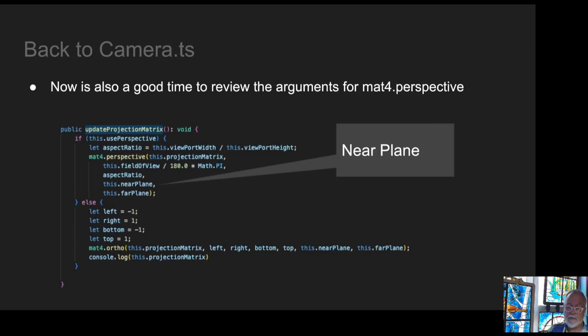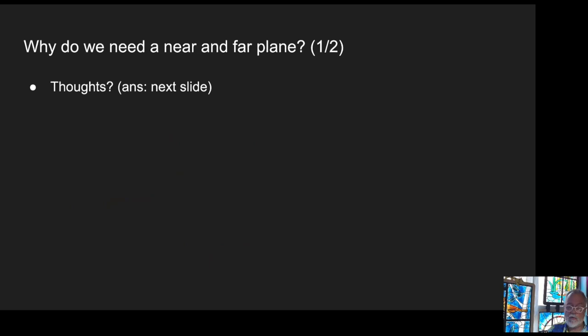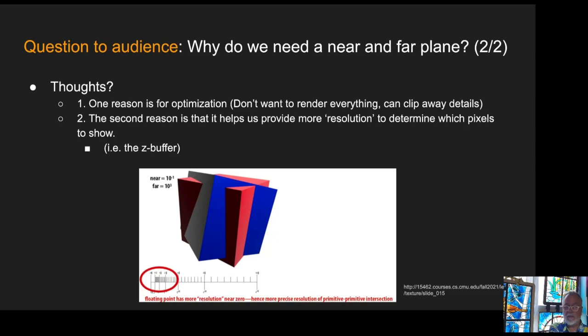And so here are the parameters, field of view, aspect ratio, near plane, far plane. And then we do the same thing for the orthographic projection. So why do we need a far and near plane? Well, one is for clipping, which we already talked about. The second is that the perspective projection is a nonlinear projection because of that divide. And if you have your far plane and your near plane too far apart, the things that are really close to you, your numerical roundoff error becomes really difficult.